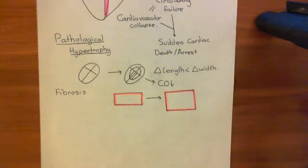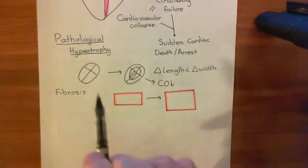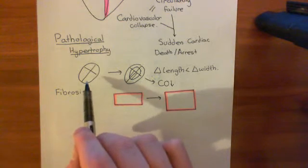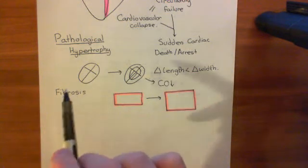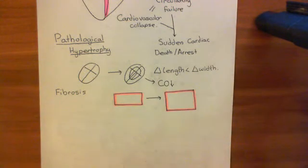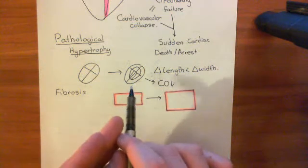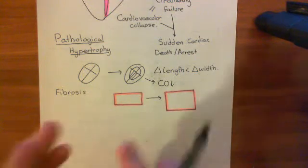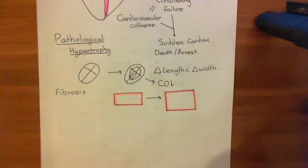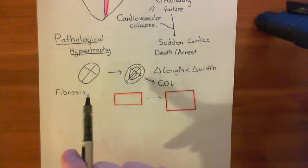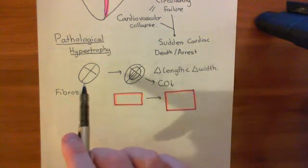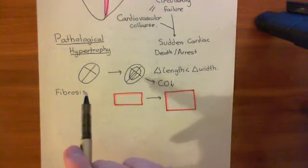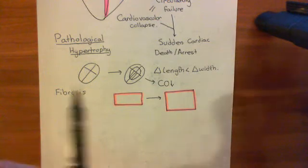Now let's discuss what actually causes pathological hypertrophy. Basically, it's the body's response to the pressure the heart is feeling from the blood being too high. The idea is that thickening the walls would increase the force of contractivity and strength of the heart. The starting point is that the heart is really struggling to pump blood into the aorta.